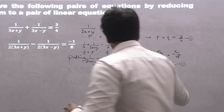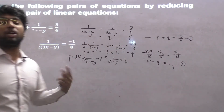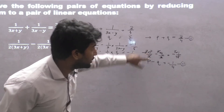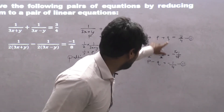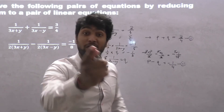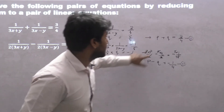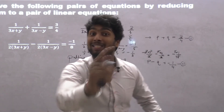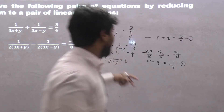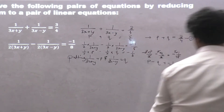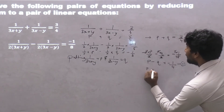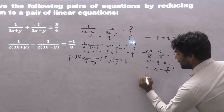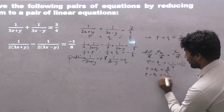I will solve equation 1 and equation 2 by the elimination method. Checking the coefficients: p appears once in both equations. Checking the signs: the signs of q are different — plus in equation 1 and minus in equation 2. Since different signs mean we add, I will add equation 1 and equation 2: p plus q equals 3 upon 4, and p minus q equals minus 1 upon 4.